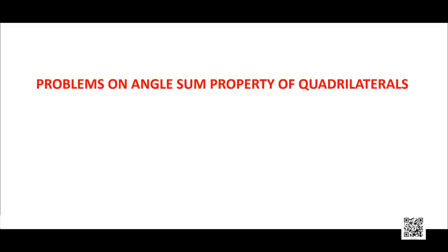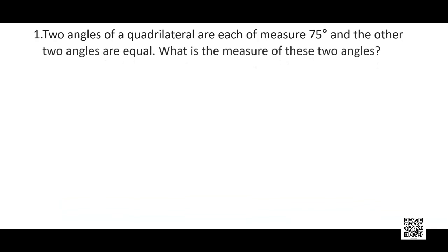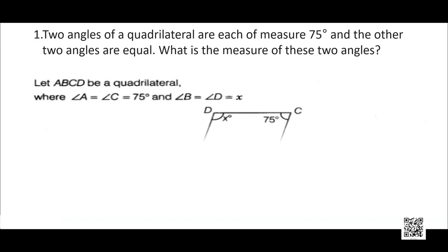Now let us do a few problems on the angle sum properties of quadrilaterals. Problem 1: Two angles of a quadrilateral are each of measure 75 degrees and the other two angles are equal. What is the measure of these two angles? We know there are four angles in a quadrilateral; two of them are 75 degrees each, and the other two are unknown. We apply the angle sum property and assume the unknown angles to be x degrees each.